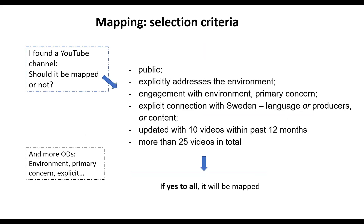In order to identify these art projects and media products, we developed a list of selection criteria for each one. For example, a YouTube channel should be registered as public, should be explicitly addressing the environment, should have an explicit connection with Sweden — either in terms of language, the producers involved, or the content. It needs to be about Sweden somehow. And it needs to have some volume — some videos in the last year. We also developed operational definitions addressing concepts in the selection criteria that are not straightforward — for example, what the environment is or what primary concern means. For a potential art project or media product to be mapped, it needs to fulfill all our listed criteria.